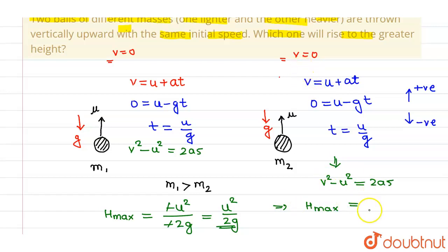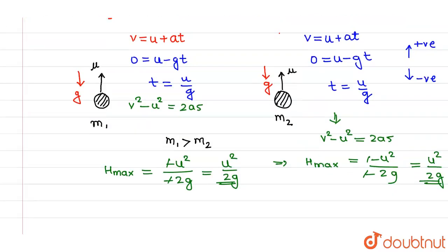So this will be minus u square by minus 2g. So negative negative will again cancel out. Again we are having the maximum height as u square by 2g.